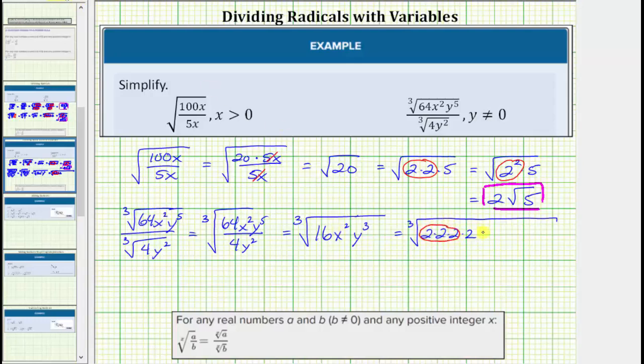Then we have x squared, which does not contain any perfect square factors. Let's go ahead and write x squared as x times x. Then we have y to the third, which is equal to y times y times y. Notice here we have 3 equal factors of y.